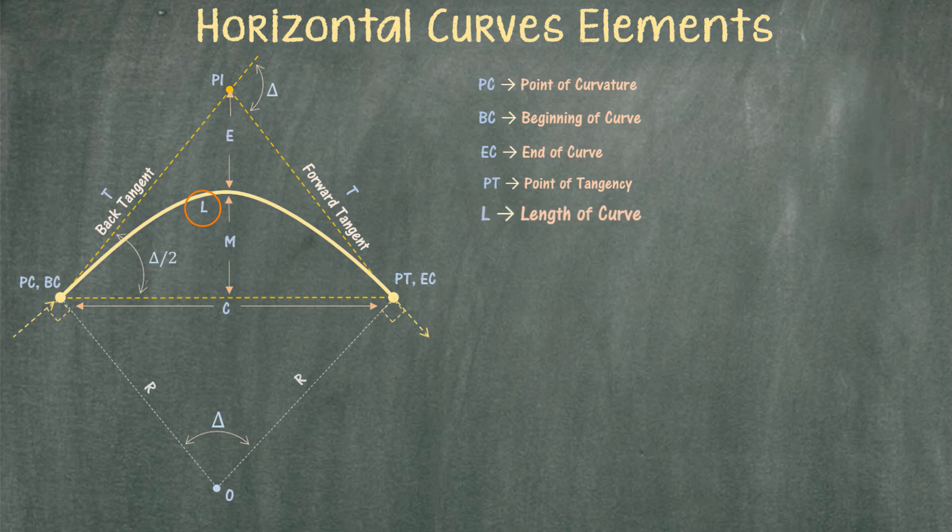L is the actual length of the curve — that is, the actual distance along the bold yellow curve.